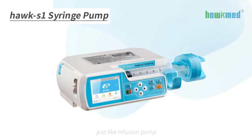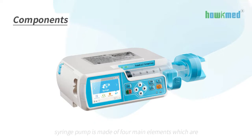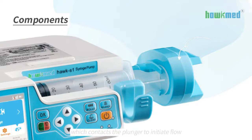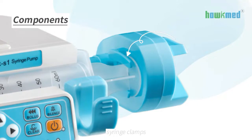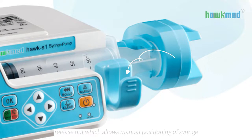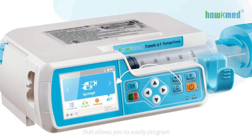Just like infusion pump, syringe pump is a small positive displacement pump used to gradually transfer precise volumes of fluid. Generally, syringe pump is made of four main elements: the pusher block which contacts the plunger to initiate flow, syringe clamps which hold syringes in place during operation, release nut which allows manual positioning of syringe pusher block, and a control panel that allows you to easily program flow rates and volumes.